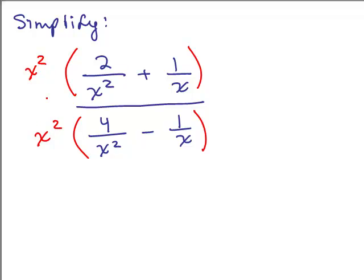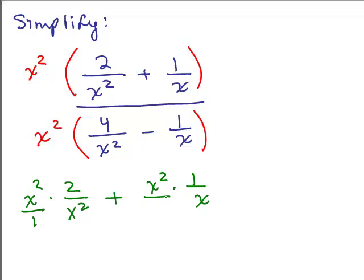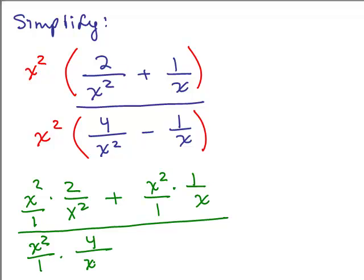That makes an equivalent fraction because you're multiplying the numerator and denominator by the same thing. You have to distribute. So in the big numerator, we've got X squared times 2 over X squared, plus distributing, X squared times 1 over X. You could write X squared over 1 if you like to see it written as a fraction. Now I'm going to do the denominator by X squared: X squared over 1 times 4 over X squared, minus distributing X squared over 1 times 1 over X.